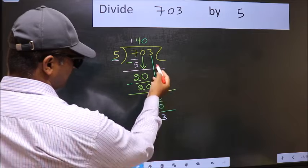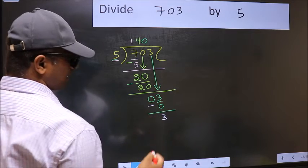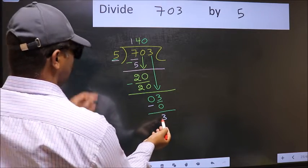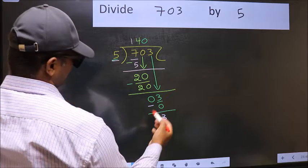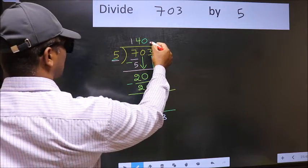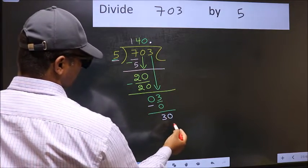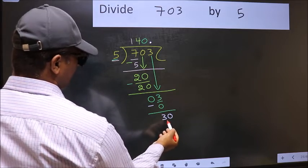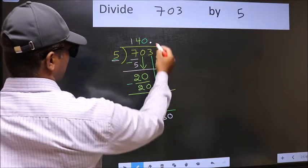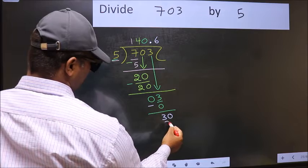Over here, we did not bring any number down. And 3 is smaller than 5. So now you can put dot and take 0. So 30. When do we get 30 in 5 table? 5, 6, 30.